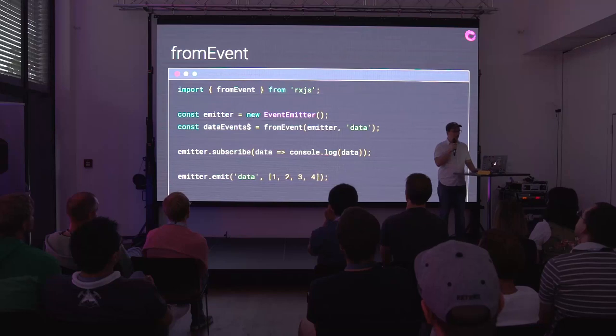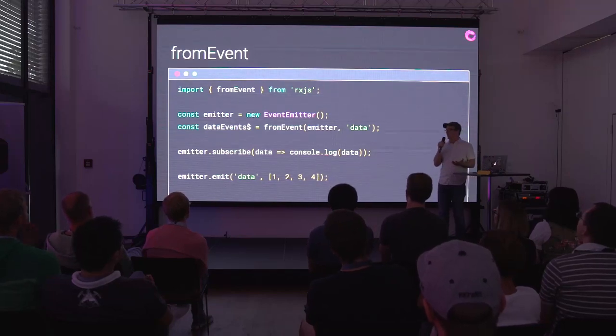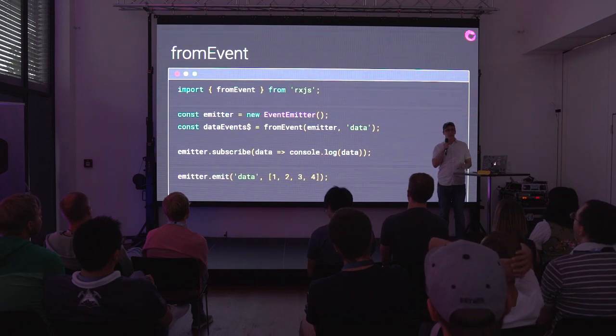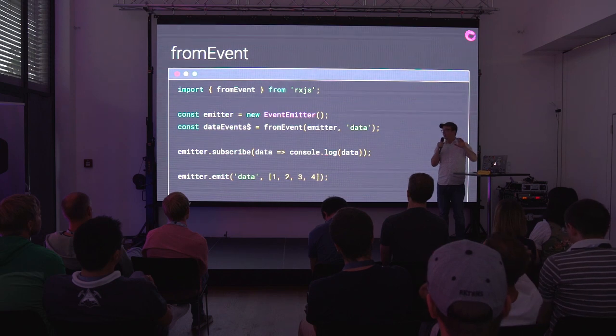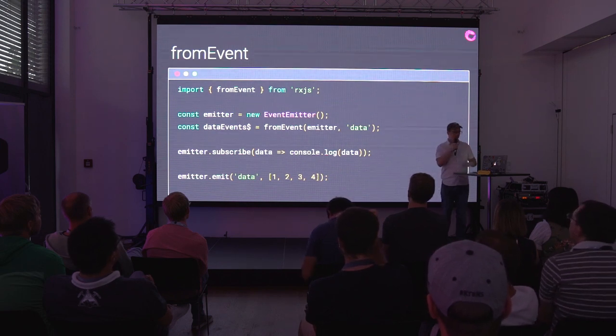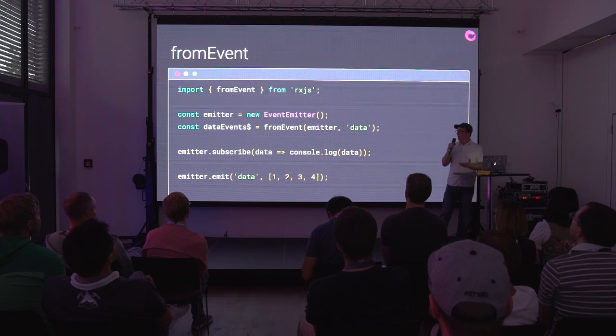Another feature built into RxJS that has specific handling for Node is fromEvent. Most people use this on event target — a DOM thing — which has the addEventListener and removeEventListener interface. For Node, this does the same thing with event emitters. If it implements addListener and removeListener — which a lot of things do in Node — you can use fromEvent to get streams of data out of it.